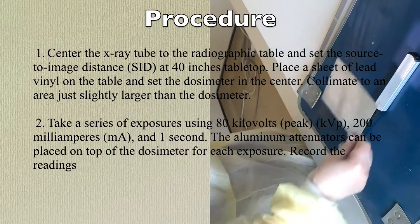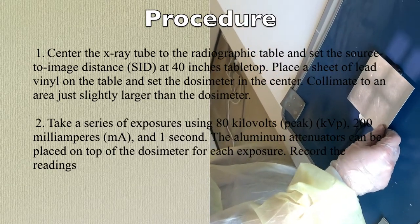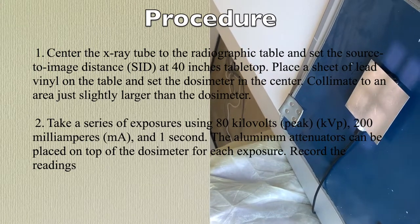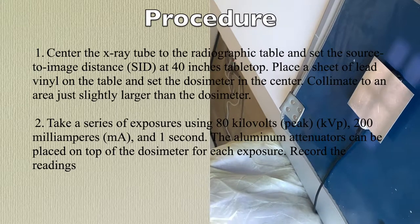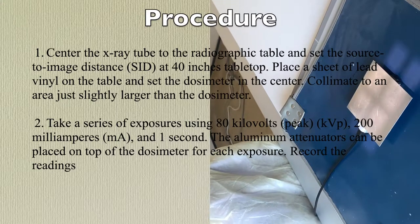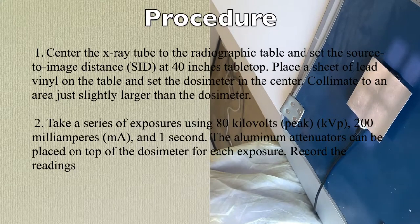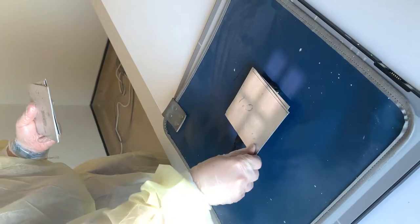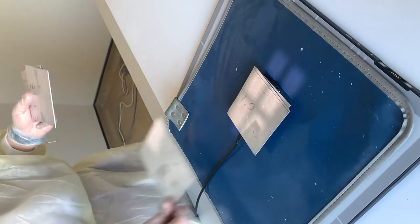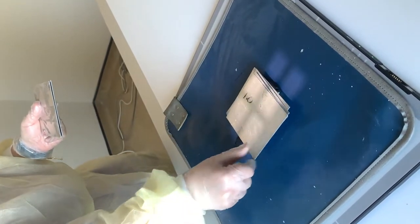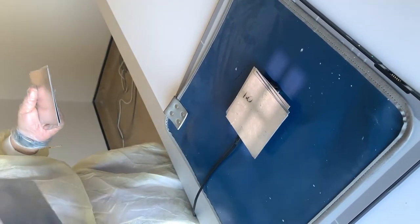After that, we add one aluminum sheet gradually, and then we expose, keeping the factors the same throughout the whole experiment. With each added aluminum sheet, we expose and check our values. We gradually add the sheets one by one after each exposure until we reach eight aluminum sheets, and with each sheet we add, we expose individually.